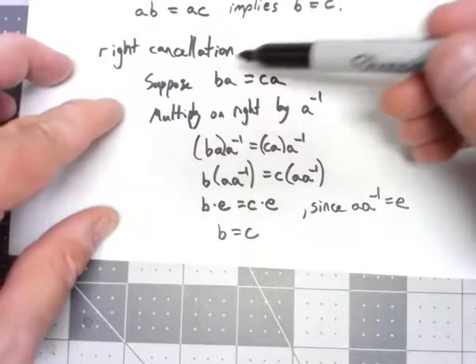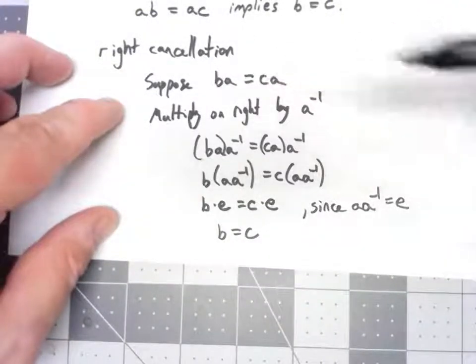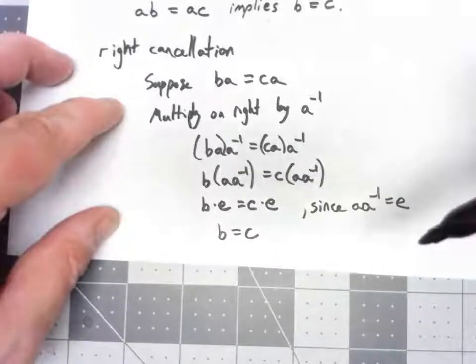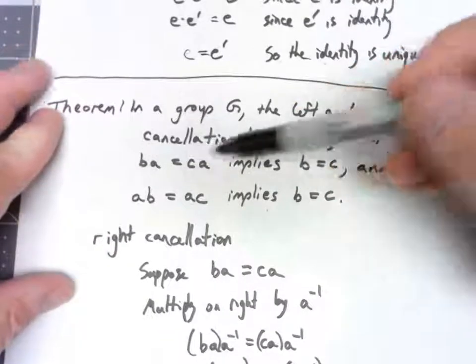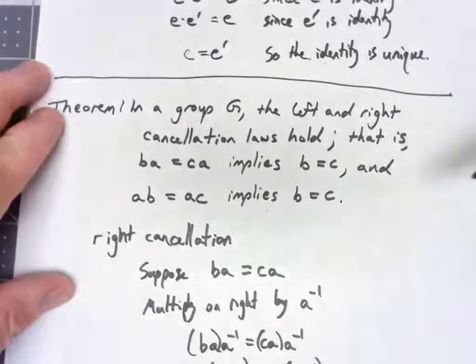If we start with, we know that BA is equal to CA, the only way that can happen is if B equals C. BA equals CA implies that B equals C.